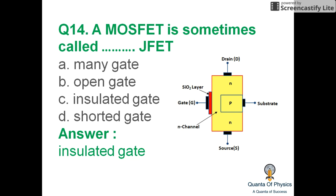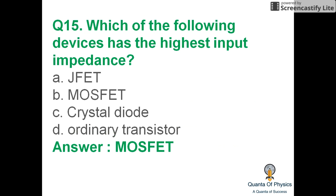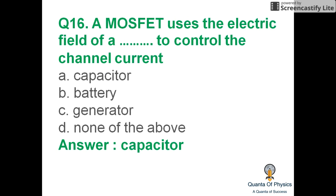A MOSFET is sometimes called an insulated gate because in a MOSFET, the gate is insulated by a metal oxide SiO2 layer. This insulating SiO2 layer is why we call MOSFET an insulated gate FET. Among common devices, a MOSFET has the highest input impedance.